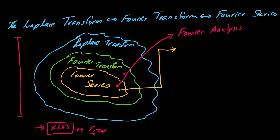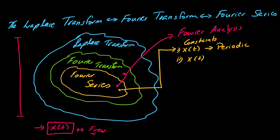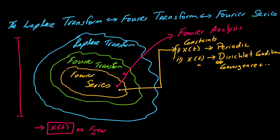For the Fourier series, the constraints are that the signal x(t) must be periodic — this is our first constraint. If it is not periodic, we cannot apply the Fourier series. Moreover, x(t) must follow the Dirichlet conditions. One out of these three conditions depends on the convergence of a given signal x(t), and there are some additional properties. Both of these must be satisfied in order to do Fourier analysis by means of Fourier series.